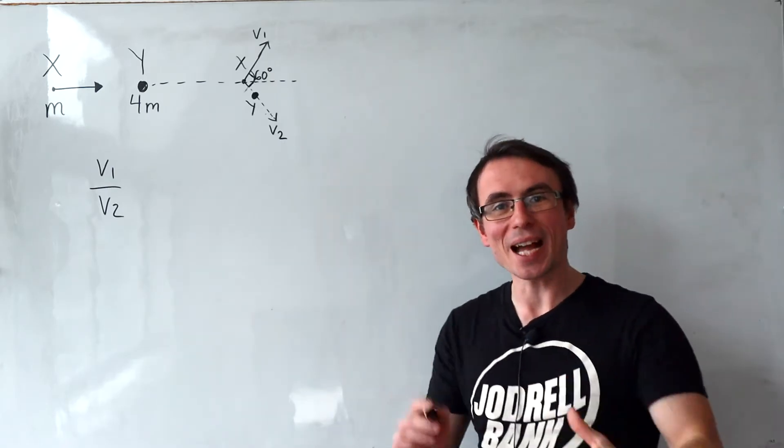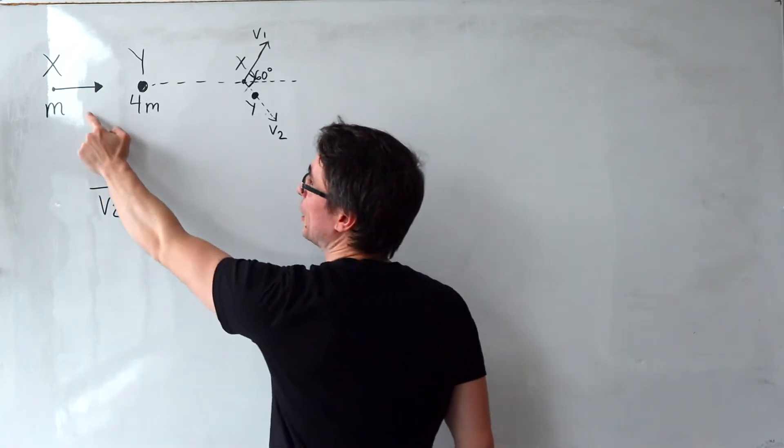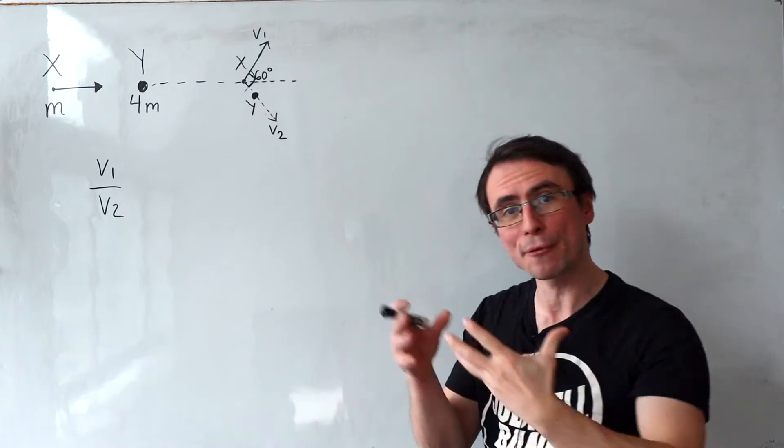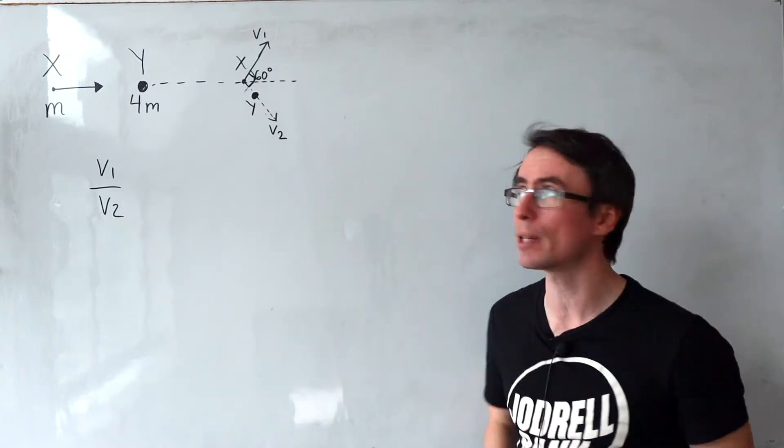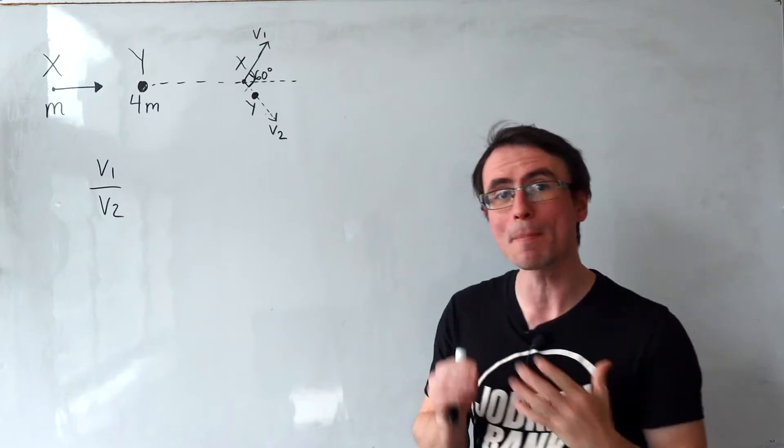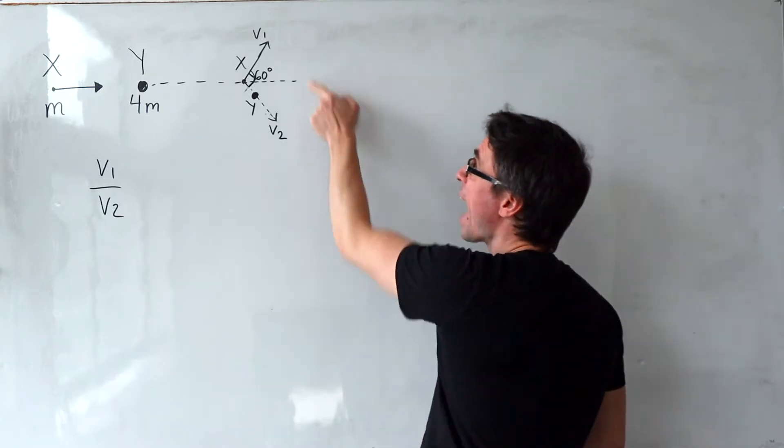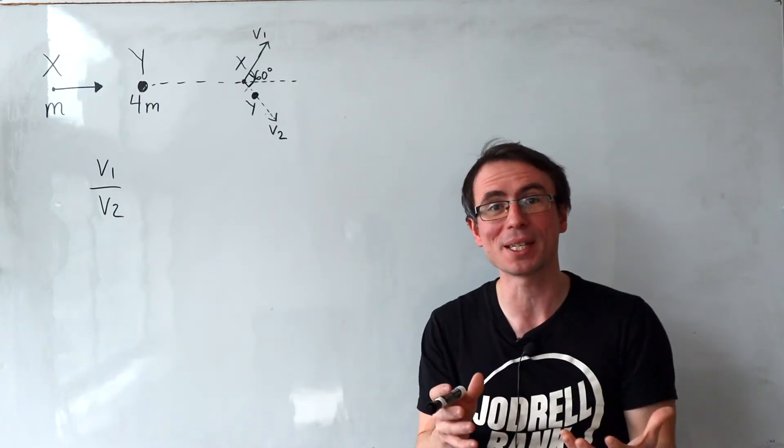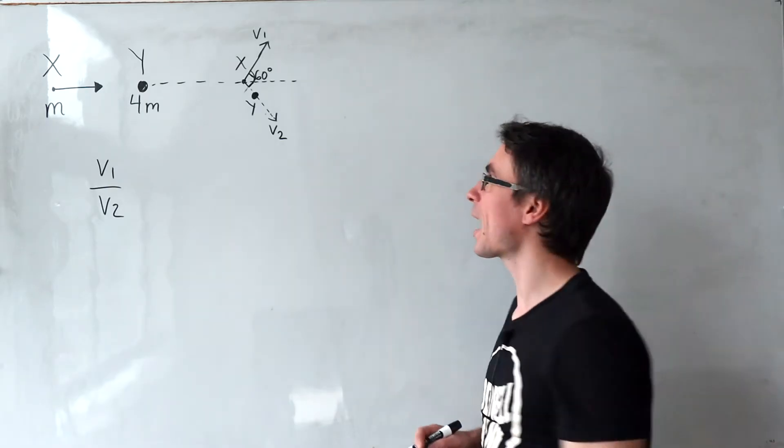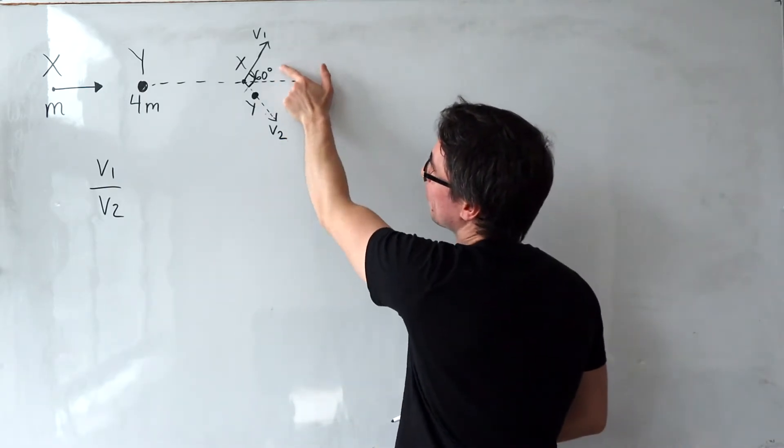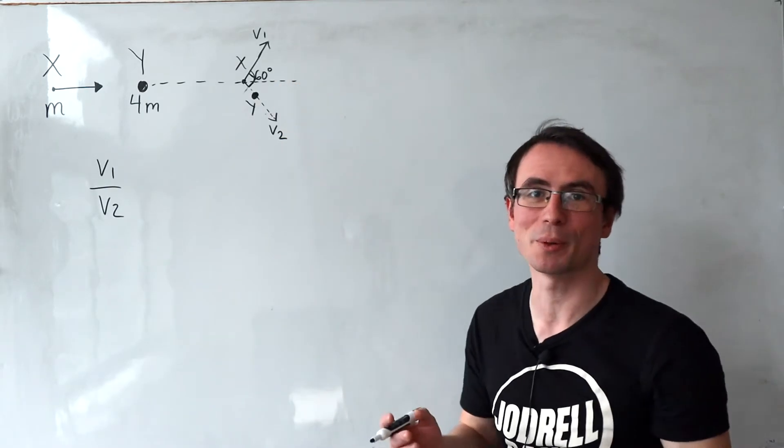The easiest way to tackle this question is to realize that the total initial momentum before the collision in the Y-axis was zero. Therefore, the total momentum in the Y-axis after the collision will need to be zero as well. In order for this to happen, the vertical components of the momentum of those two particles have to be equal and opposite.